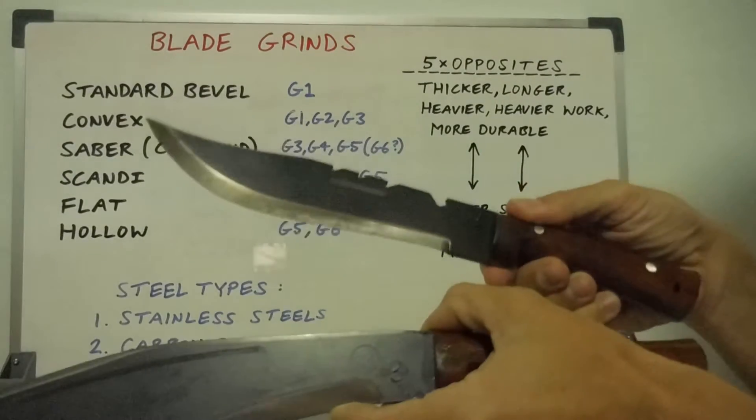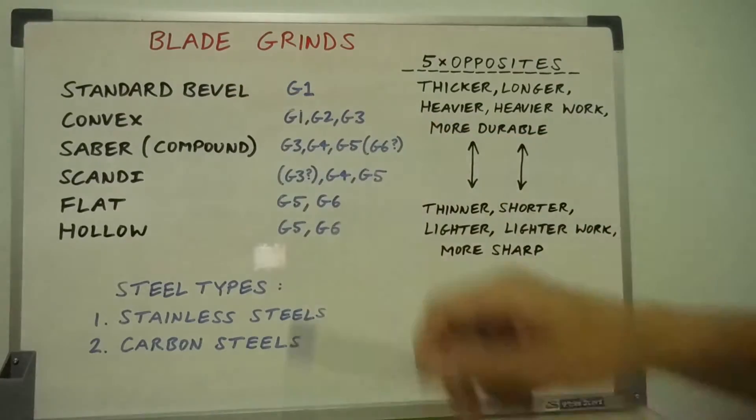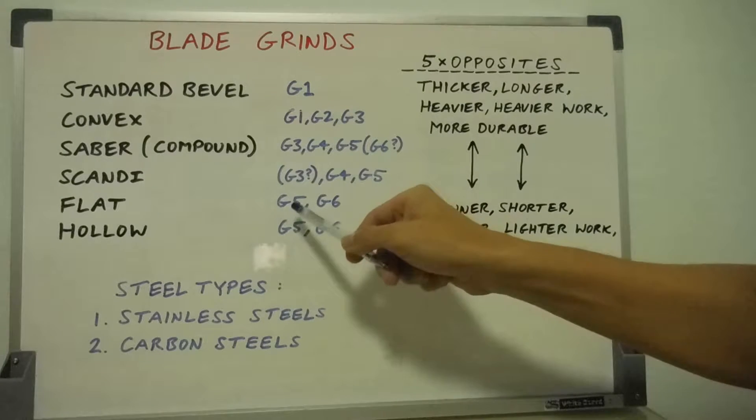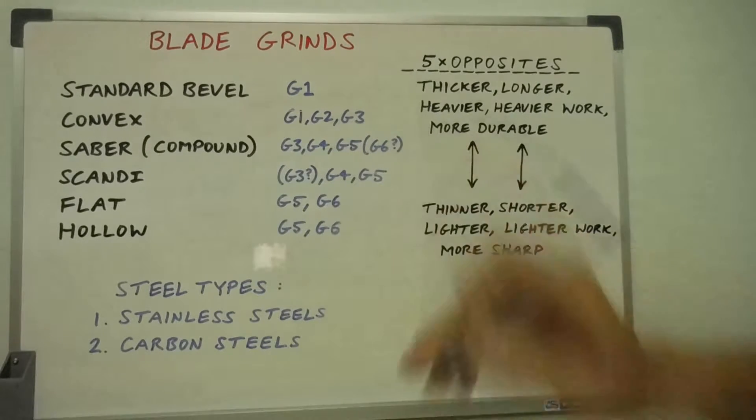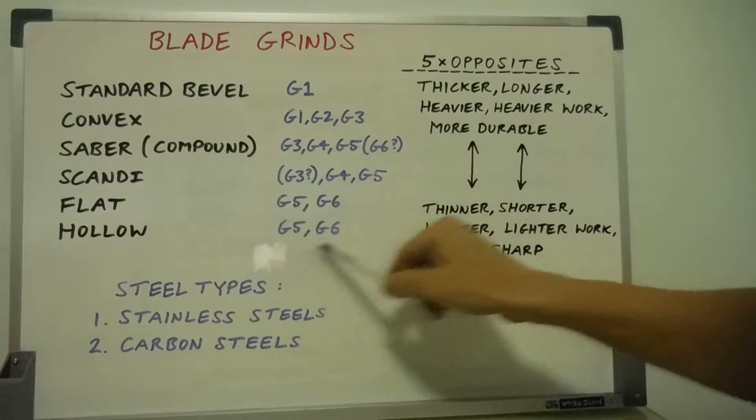And then flat grind, more sharper for your smaller knives, group five camp knives and group six folding knives. And the hollow grind, the sharpest, again, for the smaller blades.